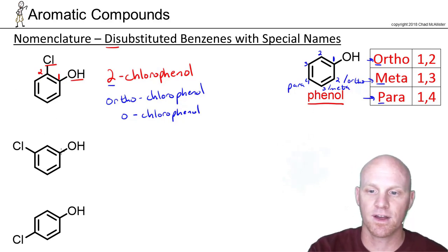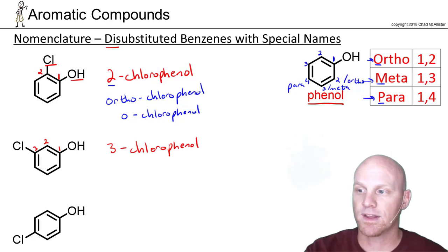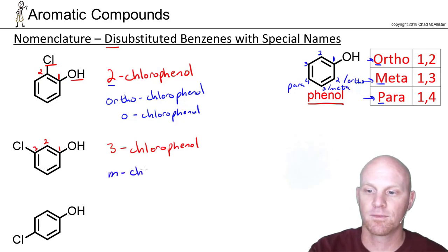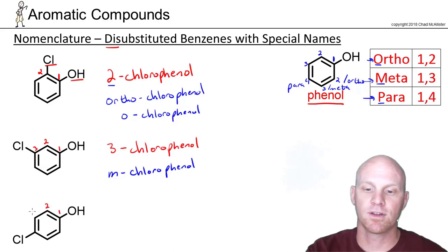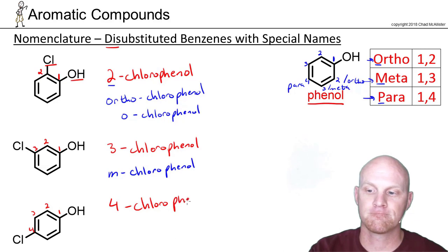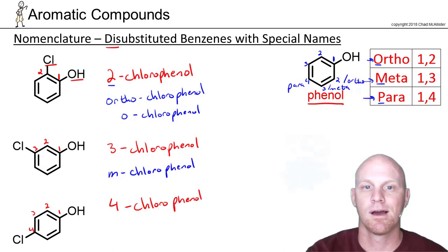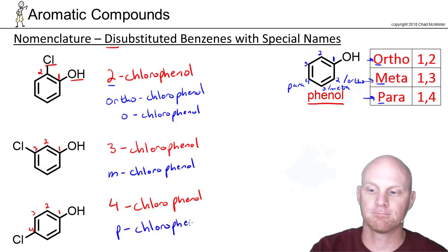For the next example — also a phenol parent chain at position one — the chlorine falls at position three, a meta relationship. So this can be called 3-chlorophenol or m-chlorophenol, same thing. And in the last example, the chlorine is at position four regardless of direction around the ring, so it's 4-chlorophenol or p-chlorophenol.